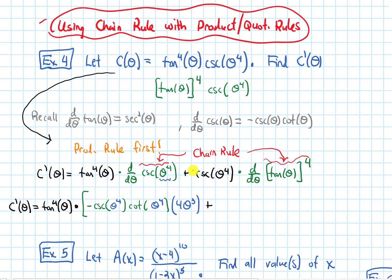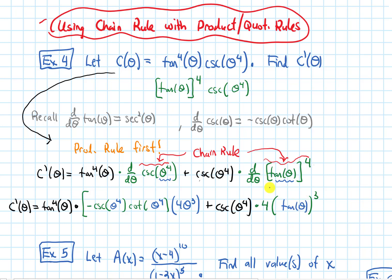Now we're on to the next term: cosecant of theta to the fourth times the derivative of tangent of theta to the fourth. The outside thing here is the fourth power, so I do power rule — the 4 comes down and I subtract 1 from the power to get a 3. But chain rule says keep plugging in the same inside thing, which is tangent of theta, then multiply by the derivative of the inside. The derivative of tangent is secant squared theta. And that is the answer.